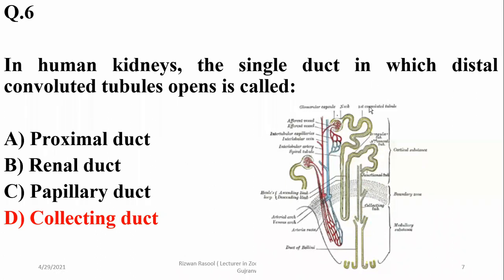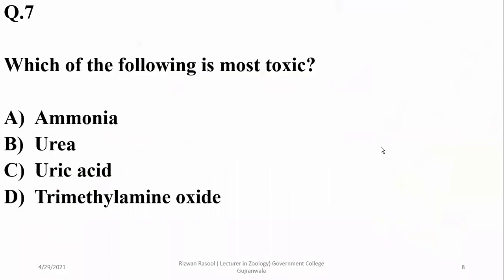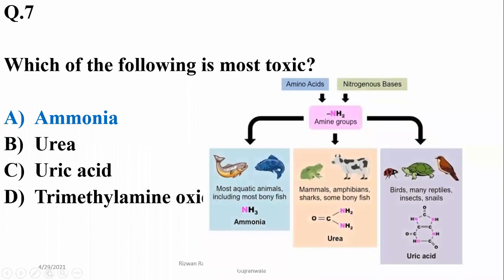Question number seven: which of the following is most toxic? Smaller is the size, more is the diffusion and penetration, and more is the toxicity. So ammonia is the most toxic out of the other nitrogenous wastes in the list. The right option is alpha.